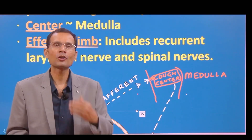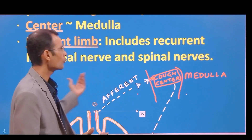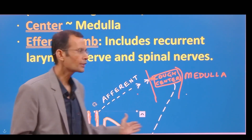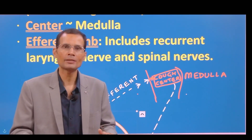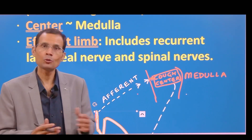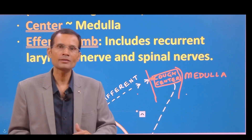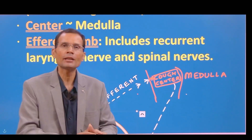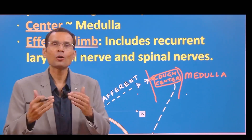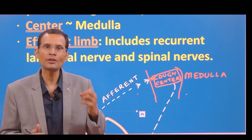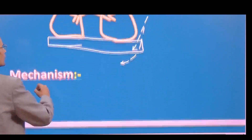The efferent nerves include the recurrent laryngeal nerve and the spinal nerves. The recurrent laryngeal nerve is needed because there is closure of the glottis and then it opens — movements of the vocal cords require this nerve. Spinal nerves are needed because there is going to be contraction of the abdominal muscles during the cough reflex. Apart from that, the cortex can also generate impulses and send them via the efferent limb to cause the cough reflex, which is why we can also voluntarily generate a cough.